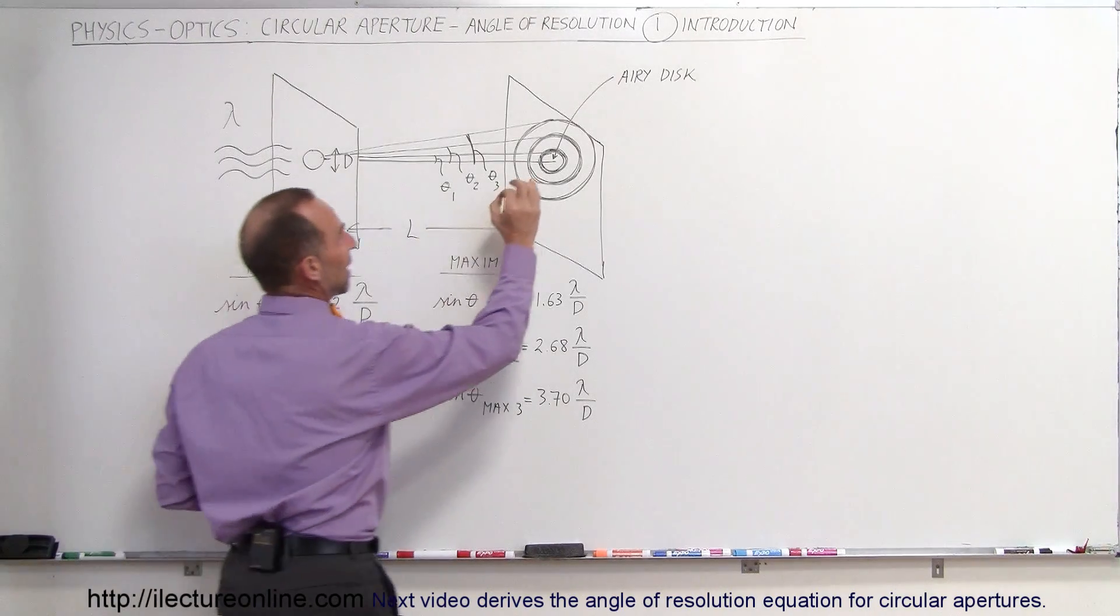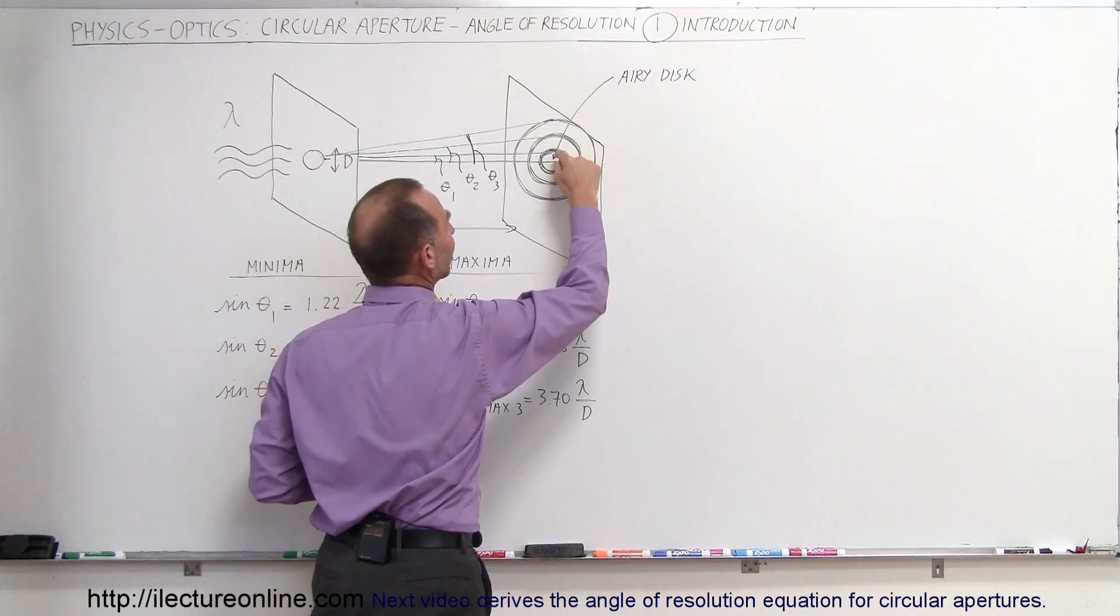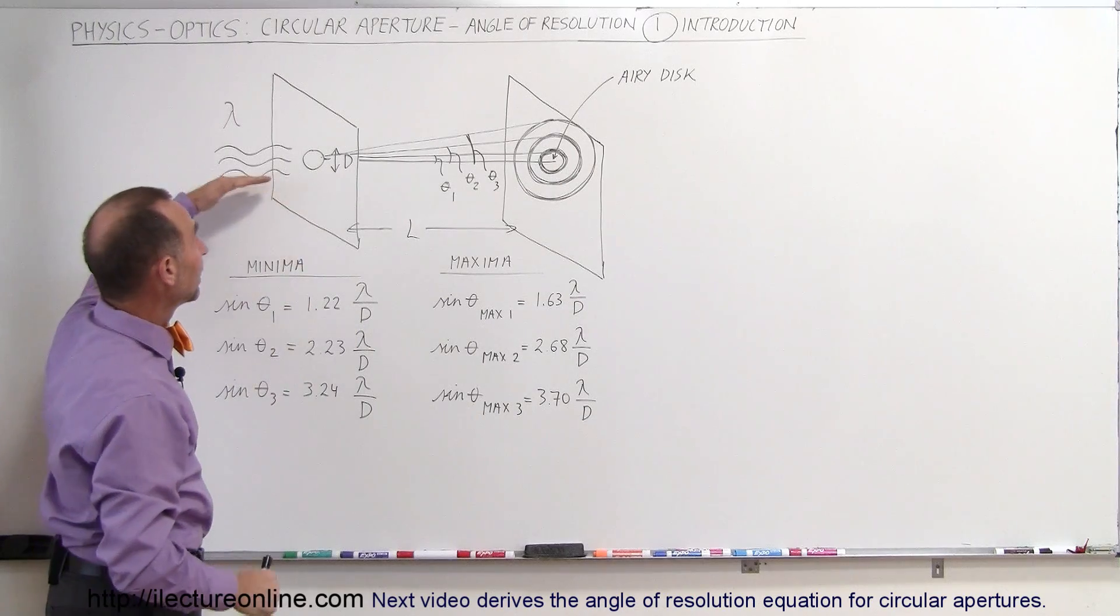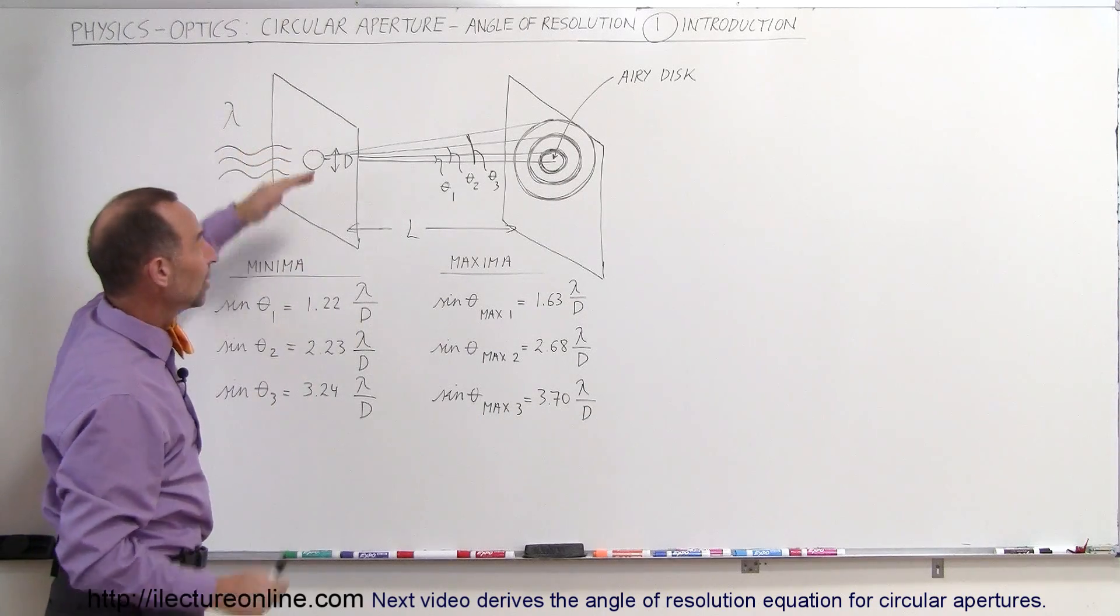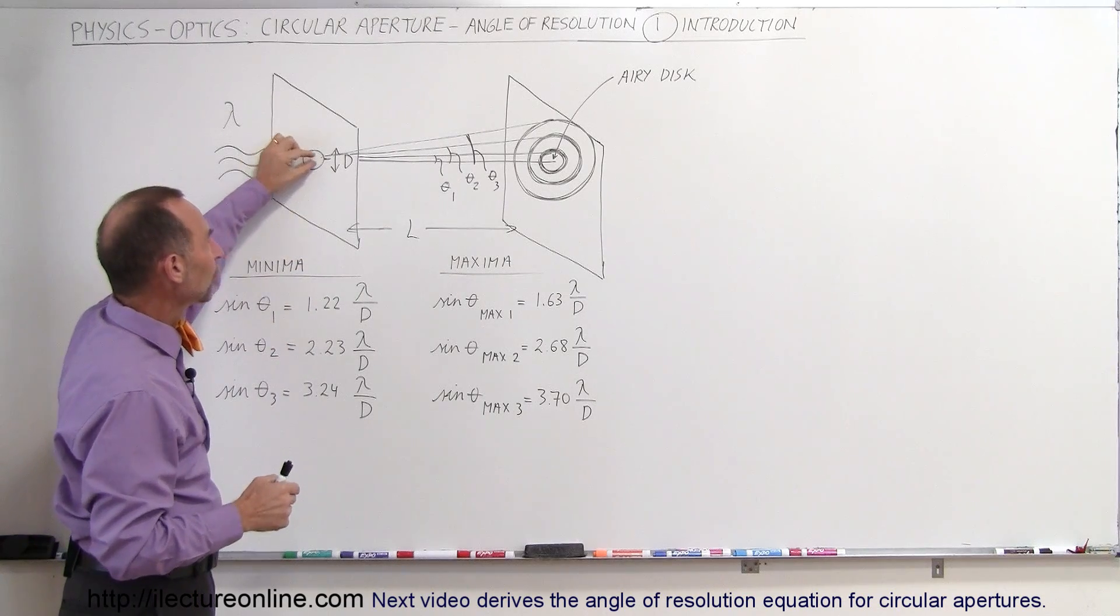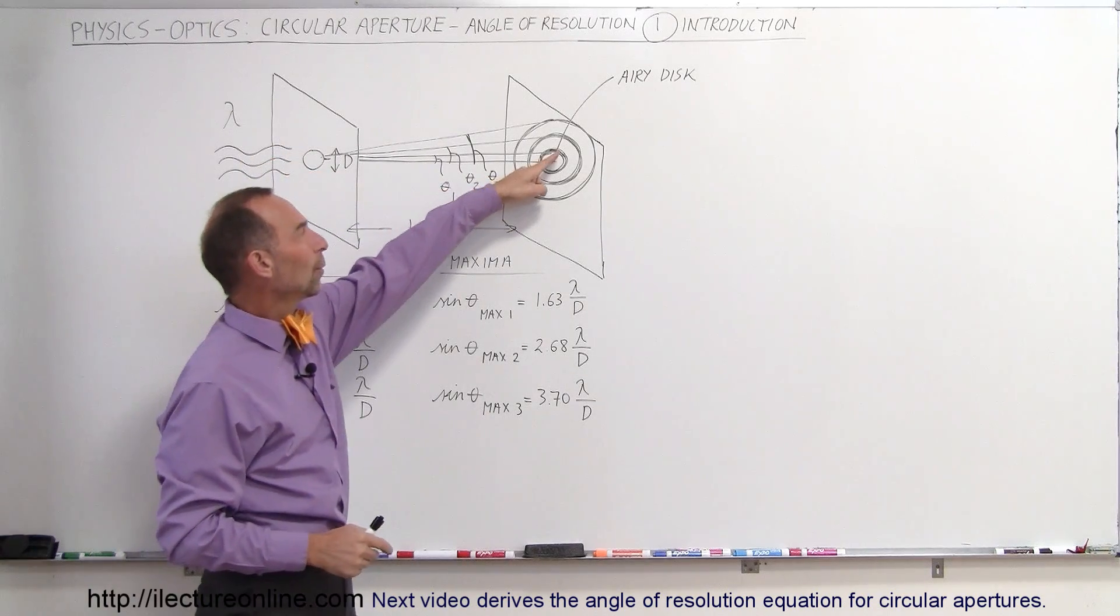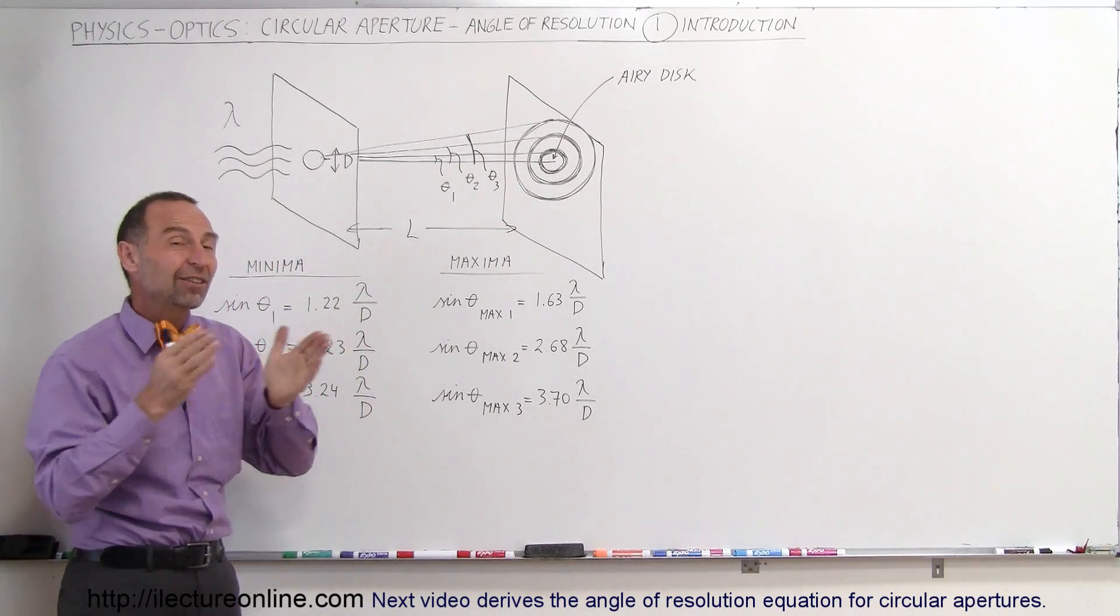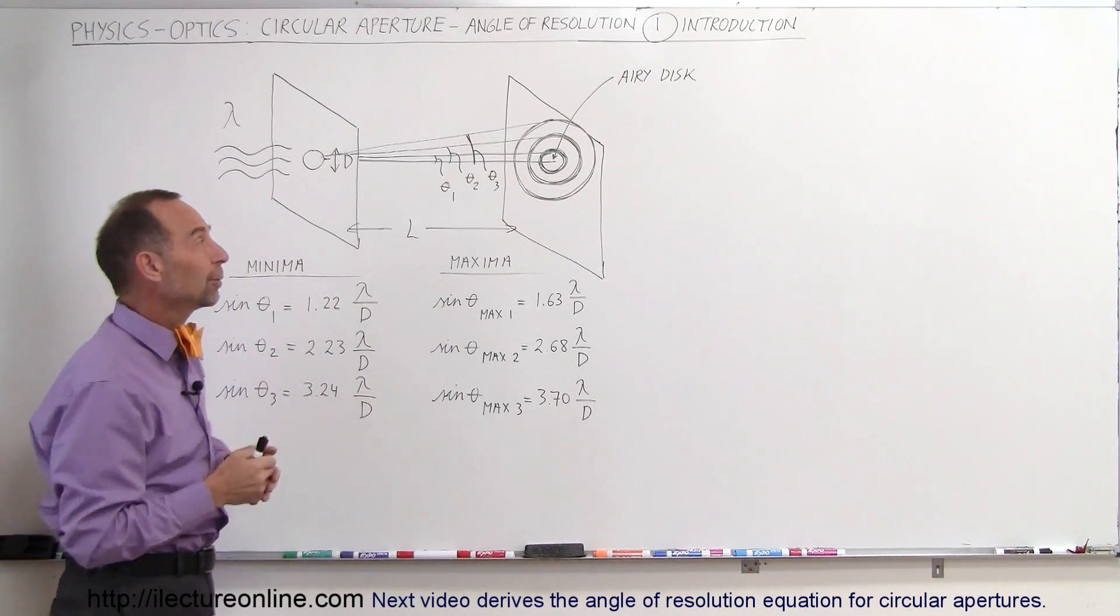Notice we have the central maximum right there, which is called the Airy disk. Then we have a minimum region around it where no light is seen, because of the way the light goes in, there will be destructive interference from some parts of the beam going through the aperture, such that when they reach that portion of the screen, there will be a half a wavelength out of phase, and therefore they will destructively interfere with each other.